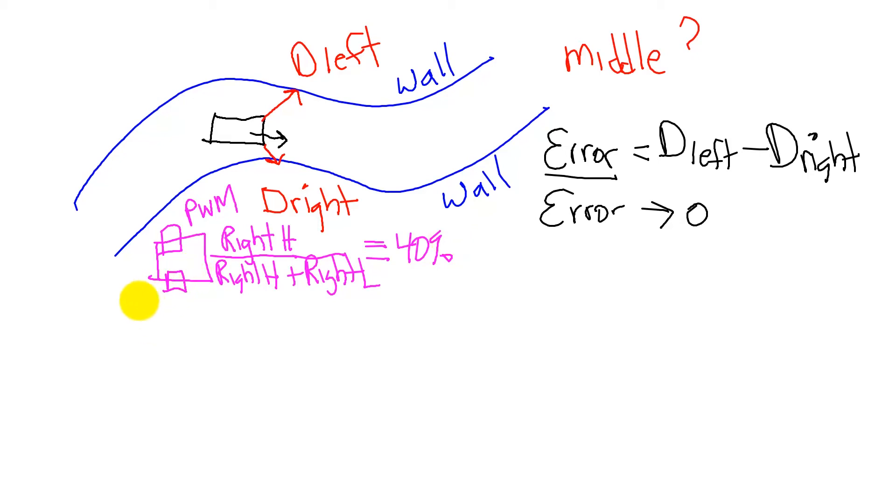The interesting part will be on the left wheel. On the left wheel, we're going to take the left high and let it change. And again, the pulse width modulated signal for the left wheel is the left high, the time in which the left output is high, plus the time in which the left is low. So this pulse width modulation here, this duty cycle is going to vary.